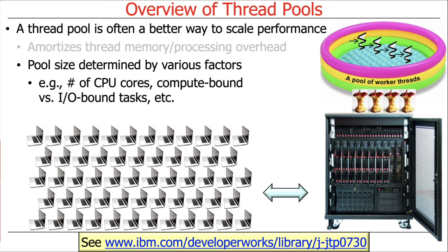That raises another question: how big should the pool of threads be? This is a very important and subtle topic — there is no one-size-fits-all solution. The pool size is typically determined by factors like the number of CPU cores, whether the tasks are compute-bound (just doing processing in memory) or I/O-bound (blocking on disk, downloads, or streaming video). There's a formula you'll need to learn to think about this.